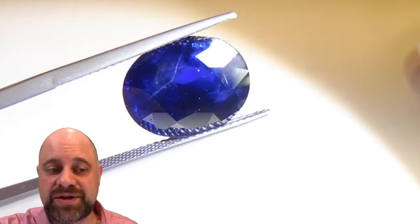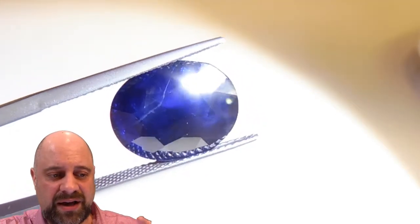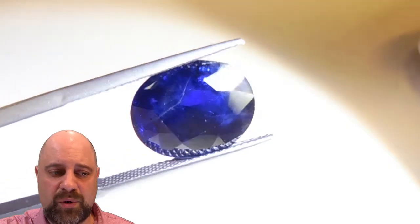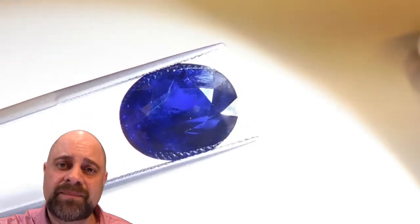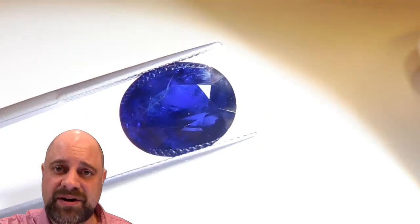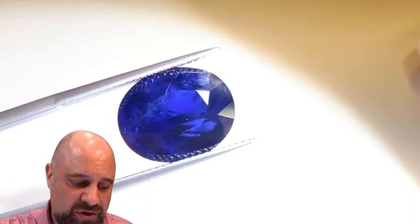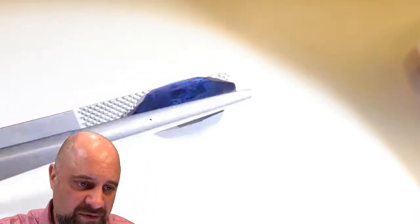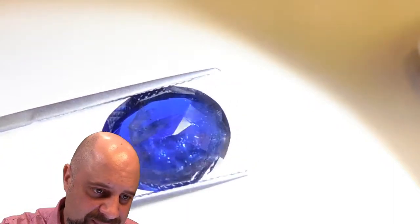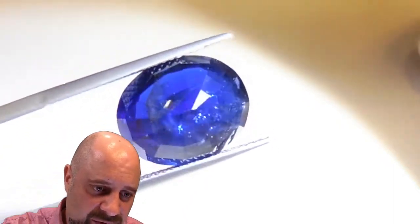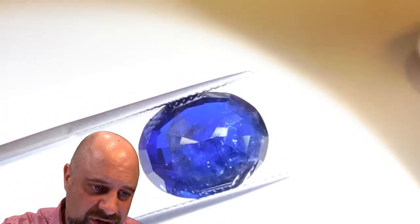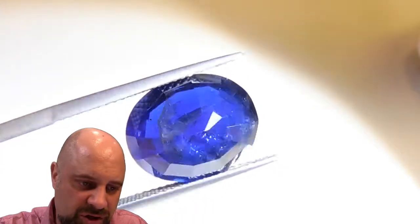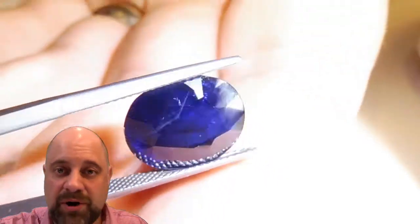So I now have the gem in a pair of tweezers and you can kind of get to take a look a little bit more. I said when it was on the turntable before that it does have inclusions in it that are eye visible. I'm going to take you on a little bit of a tour of those. You can see them very well from the back. Take a look at this. And that's where you can really see all of the inclusions through the gem.